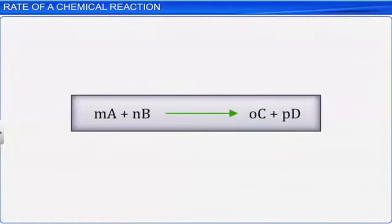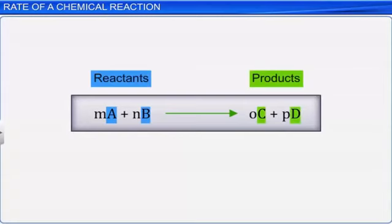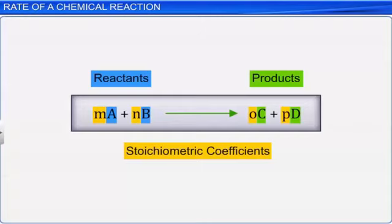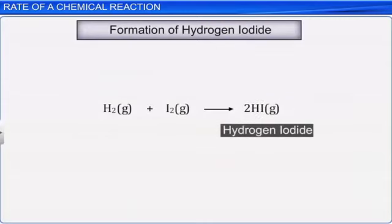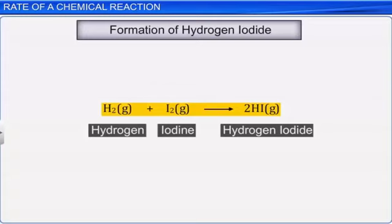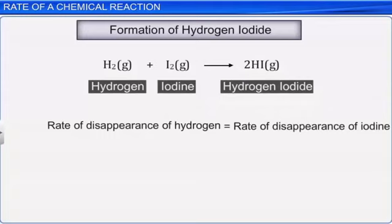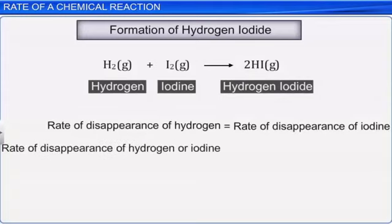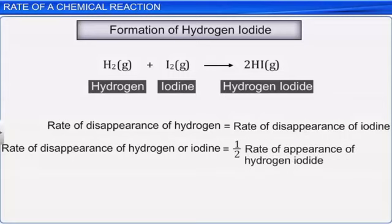The rate of reaction may not be the same with respect to all the reactants and products — it depends upon the stoichiometric coefficients in a balanced chemical equation. Consider the formation of hydrogen iodide from hydrogen and iodine. One mole of hydrogen and one mole of iodine react to give two moles of hydrogen iodide. Therefore, the rate of disappearance of hydrogen equals the rate of disappearance of iodine, and is equal to half the rate of appearance of hydrogen iodide.